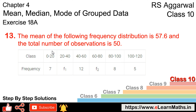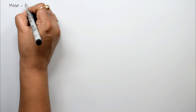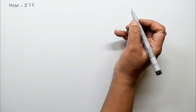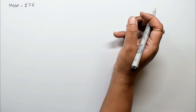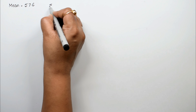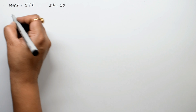Let's do question number 13 of exercise 18A, that is mean, median and mode of grouped data. The mean of the following frequency distribution is 57.6, so mean equals 57.6, and the total number of observations is 50. The total number of observations, which we call frequency, gives us summation f equals 50.